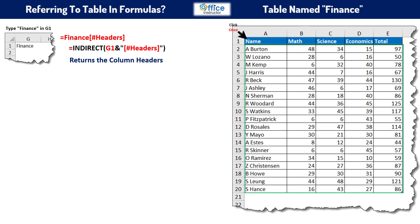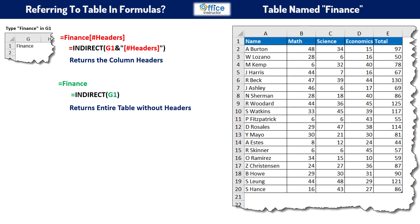You can type an equal sign, then point to the upper left corner of the table. When you see the black rotated arrow, click once — it will select the table without the headers. Alternatively, use the INDIRECT function.